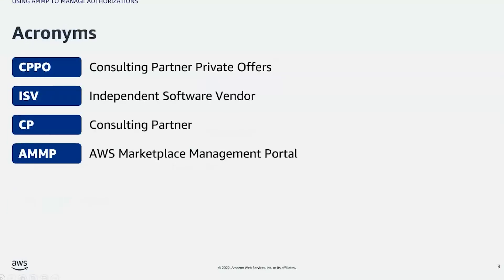To start, let's go over important acronyms related to this program. CPBO stands for Consulting Partner Private Office. ISV stands for Independent Software Vendor. CP stands for Consulting Partner, and AMMP stands for AWS Marketplace Management Portal.